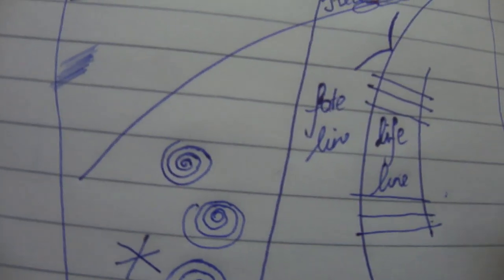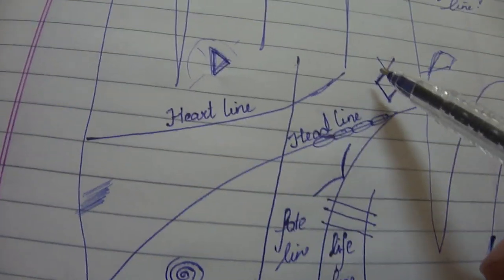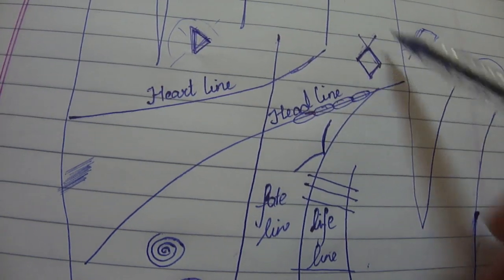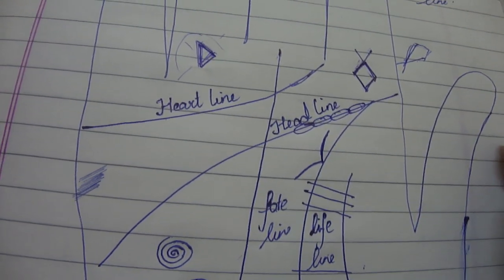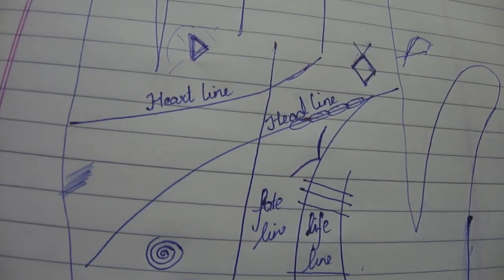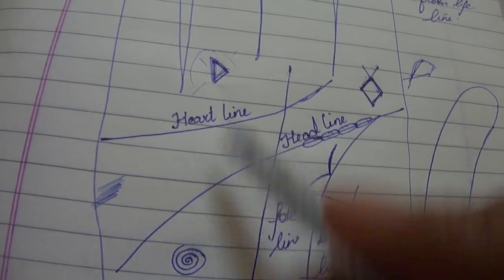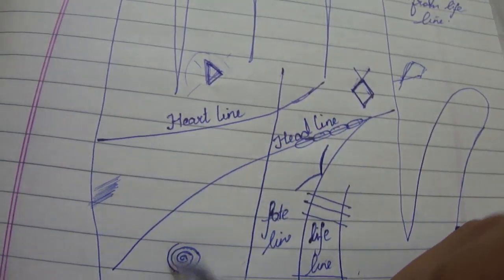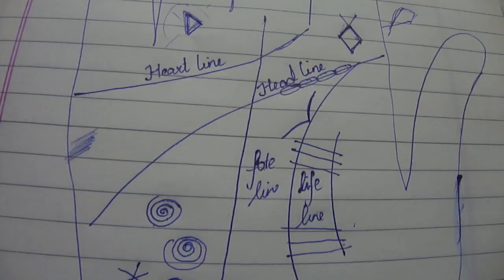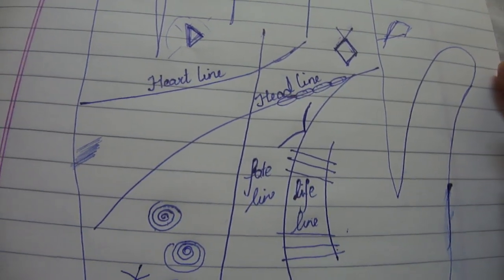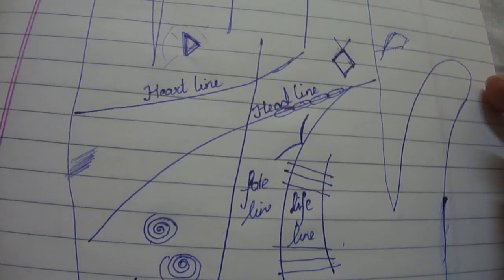Depending upon the location of this spiral, the interpretation changes. Say it's found on the mount of Jupiter — it can mean that the person will be adamant about their leadership qualities and leading things. So just associate the spiral with the mount on which it is placed. The spiral generally indicates towards a person who can work alone well.